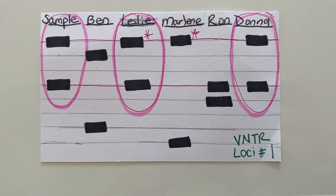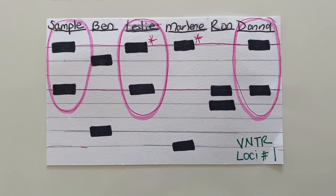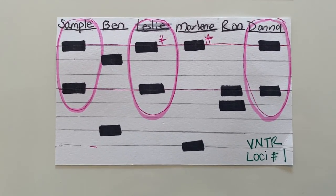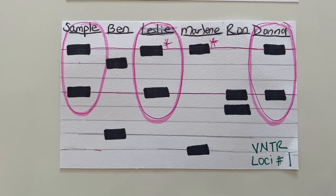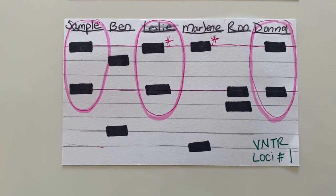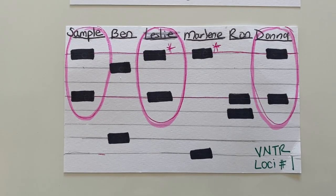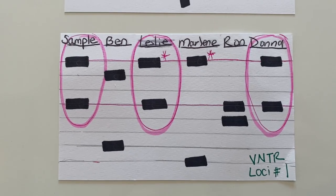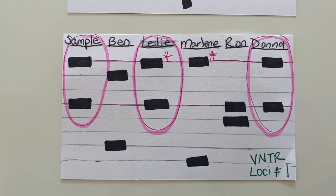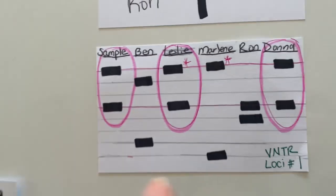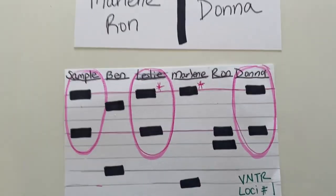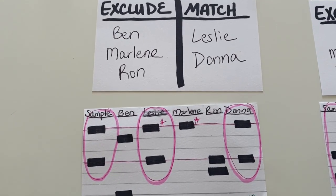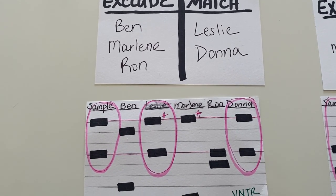Let's take a look at our two different loci. For loci 1, here we can see the sample matches perfectly with Leslie and Donna at both alleles. Only when there is a complete match at every allele can the DNA belong to the sample. We can also see that Leslie and Marlene have demonstrated maternity because they match at one allele. Therefore, we would say that Ben, Marlene, and Ron are excluded, whereas Leslie and Donna must remain suspects.